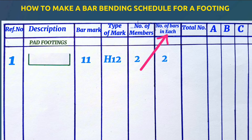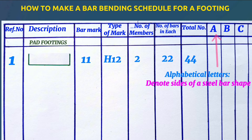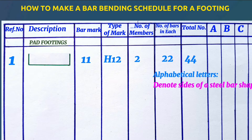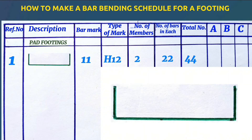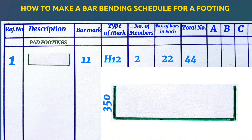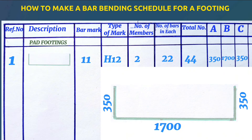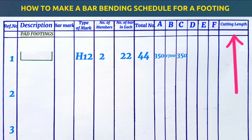If each footing has 22 bars, the total number here will be 44. These alphabetical letters denote each side of a steel bar shape. If this is the steel bar for the footing, this is side A, this is side B, and this is side C. Considering a steel bar for the footing with 350 millimeters here, 1.7 meters along the longer side and 350 millimeters also here — A is 350mm, B is 1.7m, and C is 350mm. For the last column, we add these alphabetical letters to get the total cutting length.